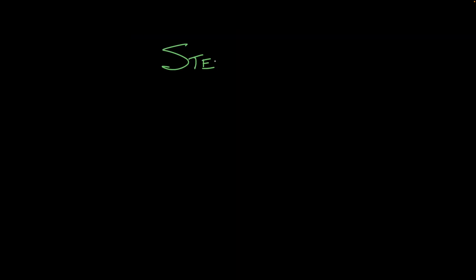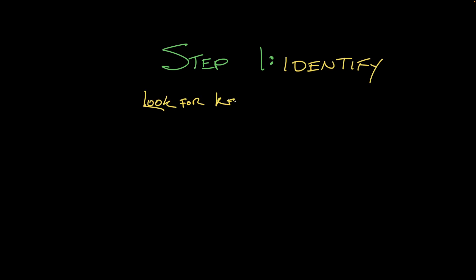Here are the steps you can use to compare text structures. First, identify — figure out what the structure is. One way to do this is by looking for keywords, words that show the structure. For example, a chronology will list events in order and may use number or sequence words like first, second, then, and finally. A comparison will likely have comparing words and phrases like on the other hand, similar, or different.